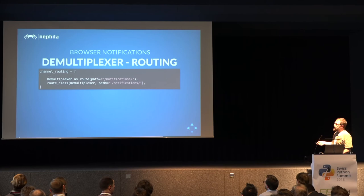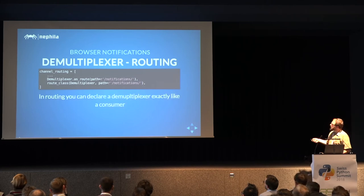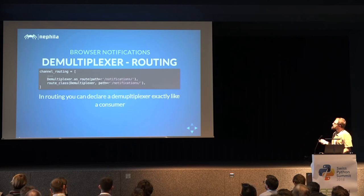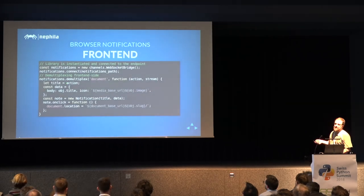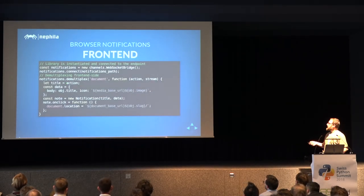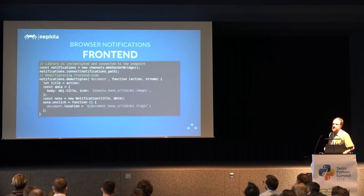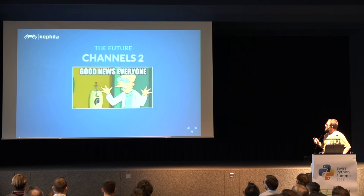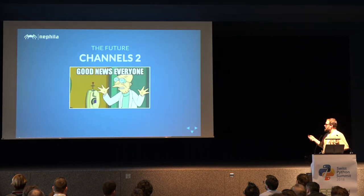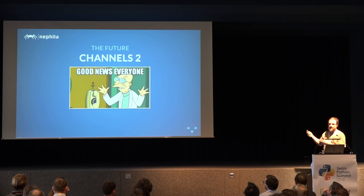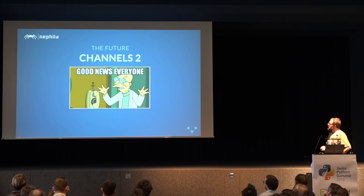Multiplexers are normal consumers, so you just put them in the routing. On the front end, you use a slightly different function — multiplex instead of listen — because you have to take the stream into account. Other than that, it's the same thing. You get the data, and using the HTML Notification API, you can send a notification back to the users. The application code is well-commented, so hopefully it will be useful.